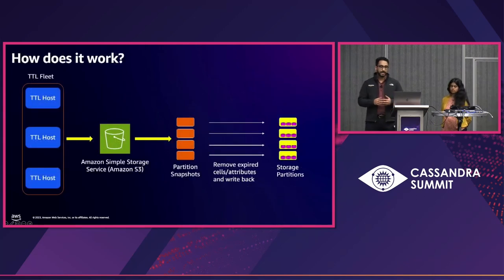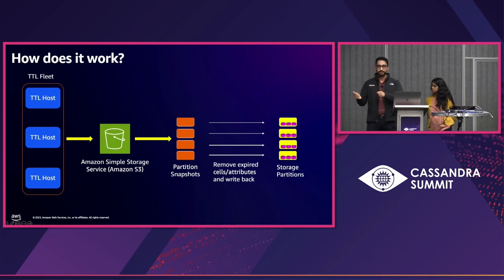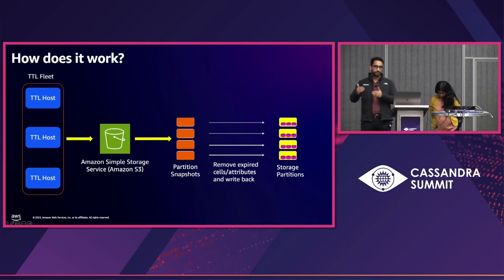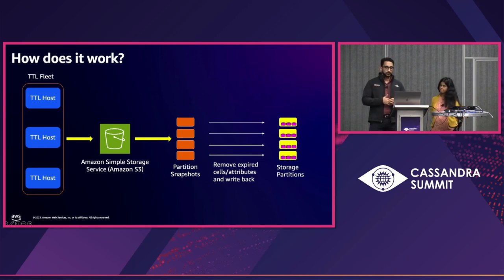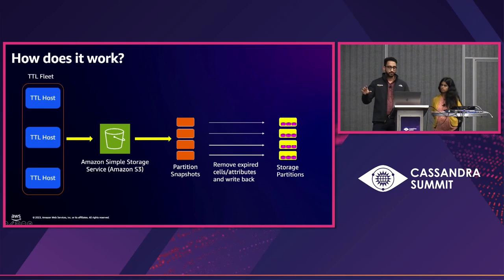How do we do the compaction in the background? We have a fleet of hosts for this use case. We already take snapshots continuously for PITR, and we reuse those same snapshots for TTL compaction. We use snapshots rather than directly reading the table because a direct table scan would be a costly operation for both us and the customer. The TTL hosts go to S3, get the most recent partition snapshot, compact it by removing expired cells and rows, and write it back to the storage partitions — all in the background with no performance impact.